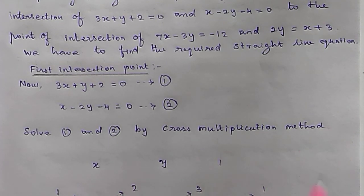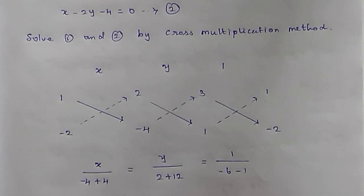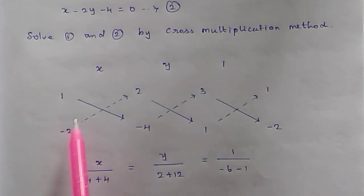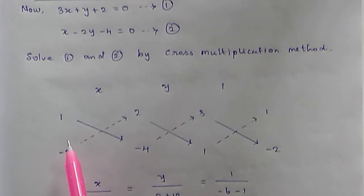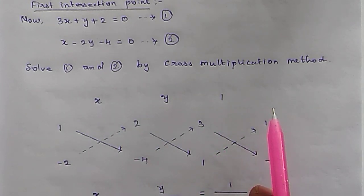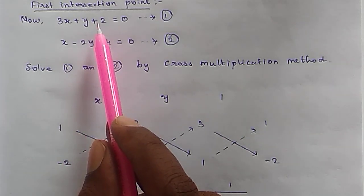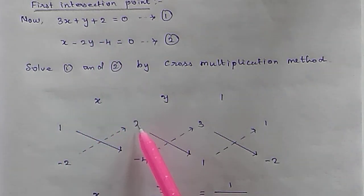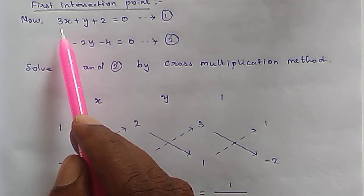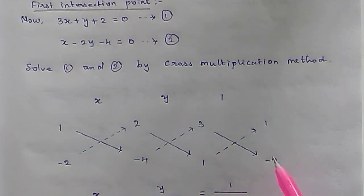Setting up the cross multiplication: write x, y, 1. For the cross multiplication table, the coefficients of y are 1 and −2, constants are 2 and −4, and coefficients of x are 3 and 1. So we write: 1, −2; 2, −4; 3, 1; 1, −2.